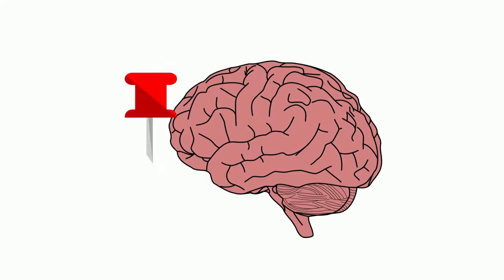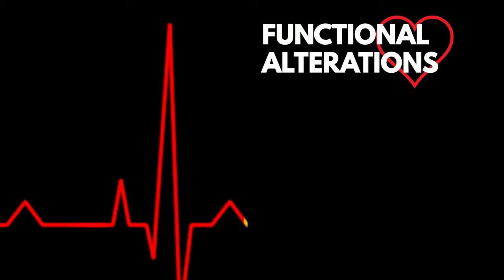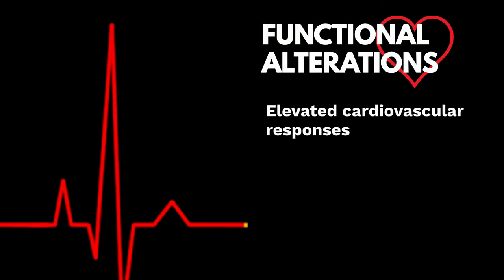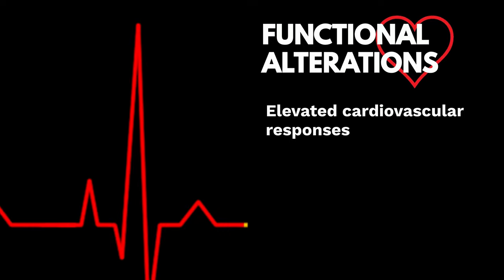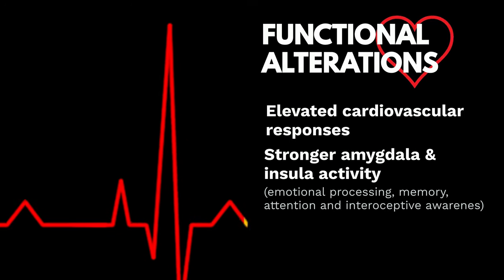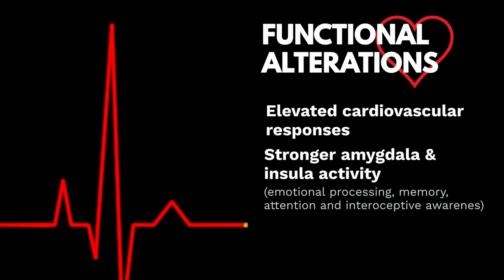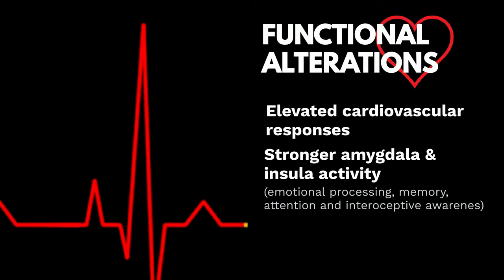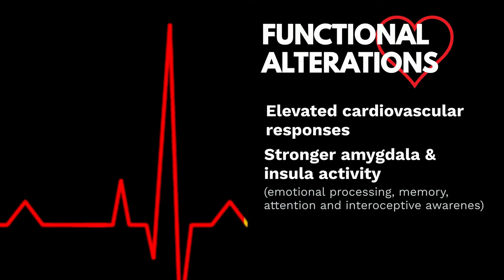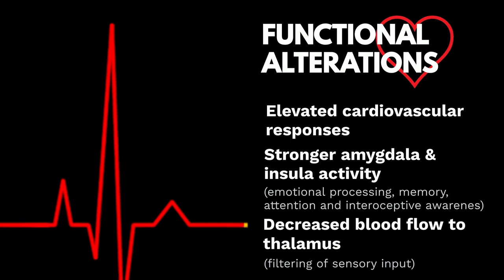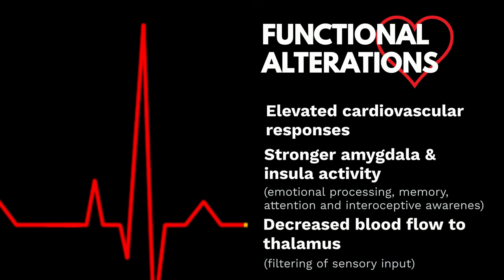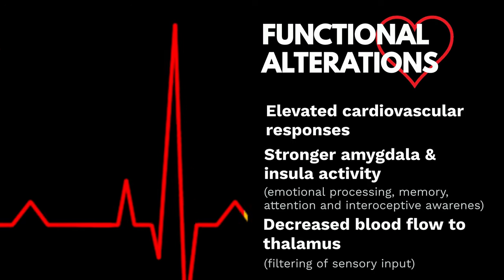Up to now, the precise neurobiological underpinnings of dissociation remain elusive, but a growing number of neuroimaging studies have found altered brain structure and function for those with dissociative disorders. Studies that investigated functional alterations found that DID patients showed elevated cardiovascular responses like heart rate and blood pressure, and stronger amygdala and insula activity that are responsible for emotional processing, memory, attention and introspective awareness. In another study, DID patients exhibited decreased blood flow in the thalamus during altered state, which is responsible for the filtering of sensory input.